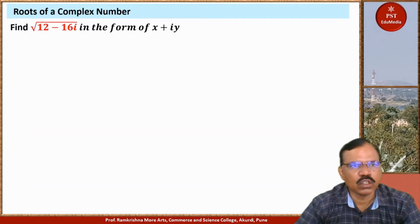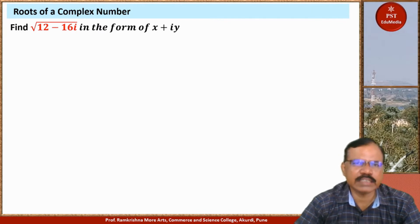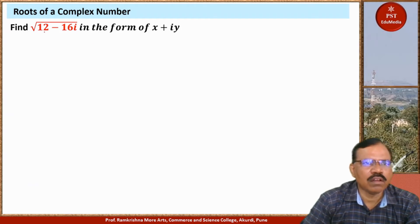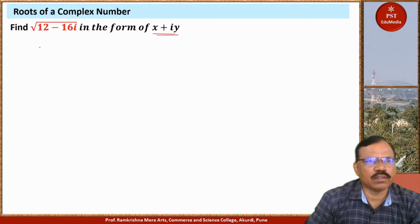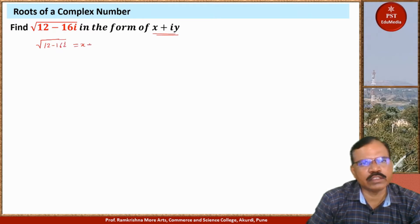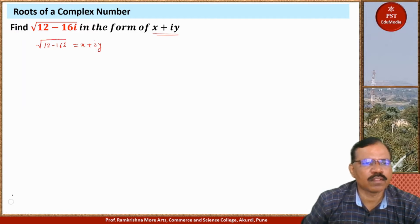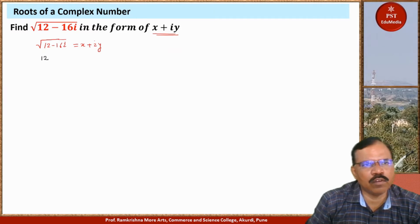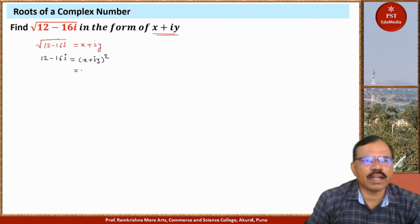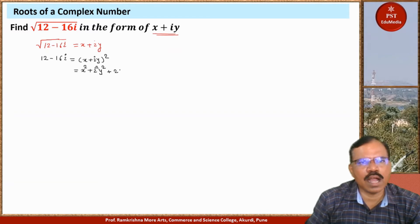Find the square root of 12 minus 16i in the form x plus iy. So the complex number is 12 minus 16i and we have to write its square root in the form x plus iy. We set root of (12 minus 16i) equal to x plus iy, then square both sides to get 12 minus 16i equals (x plus iy) squared, which expands to x squared plus i squared y squared plus 2ixy.